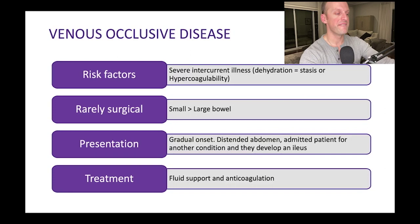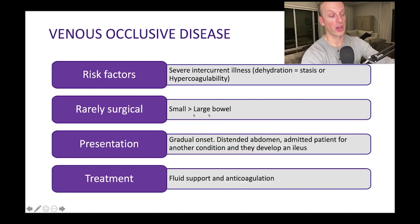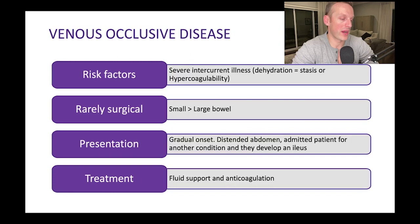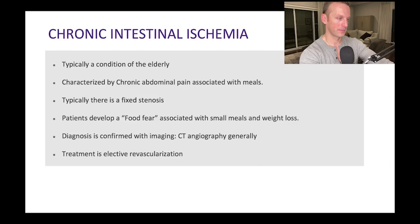Shifting to venous occlusive disease: these patients typically have a hypercoagulable state — think DVT risk factors — or a severe intercurrent illness causing dehydration and low-flow state, leading to venous thrombus formation. They're rarely surgical. Presentation is gradual-onset distended abdomen in a patient who is already ill for another reason, developing an ileus. Management is supportive: fluids to keep well hydrated and anticoagulation.